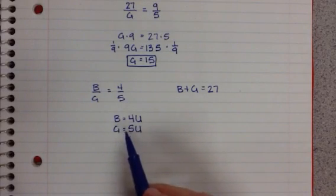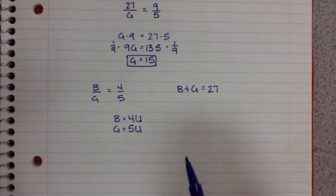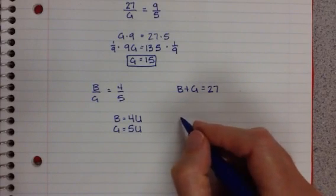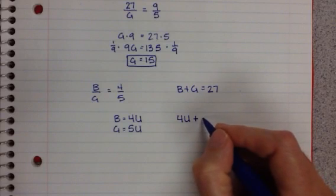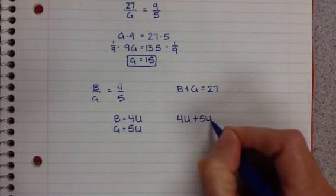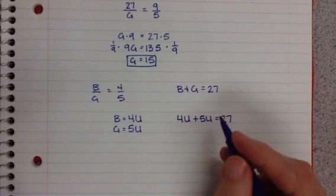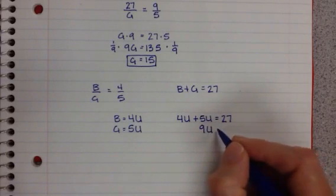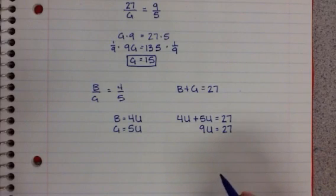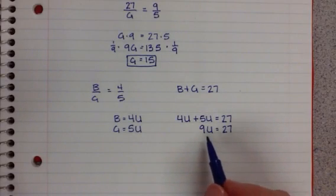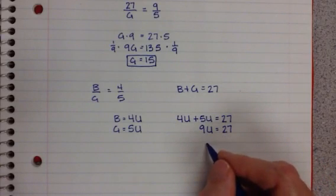Well, now we can take this information and plug it into our B plus G equals 27, which would give us 4U plus 5U equals 27. Well, a 4U and a 5U is 9U equals 27. And so now, what number times 9 is equal to 27? Well, that would be 3.